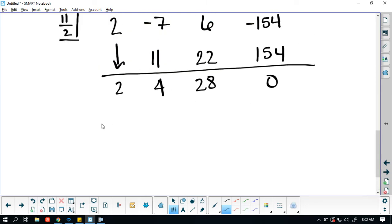So we're looking at 2x squared plus 4x plus 28 times x. Change the sign of that, which is 11 divided by 2. And so the factor form of the equation is x minus 11 divided by 2 times the polynomial 2x squared plus 4x plus 28. And this is indeed equal to 0.